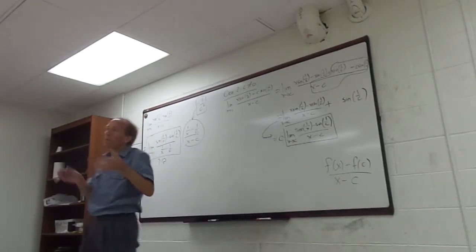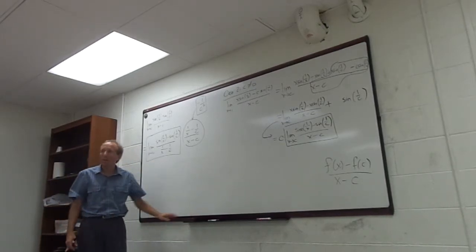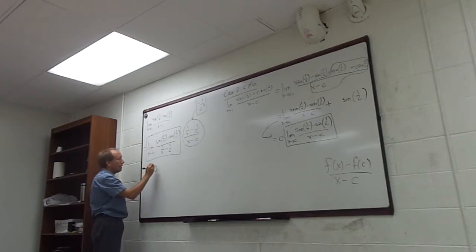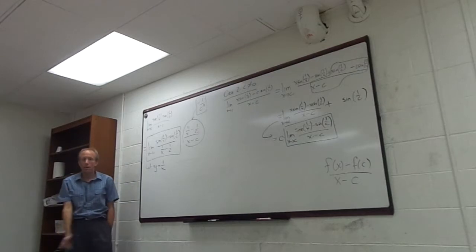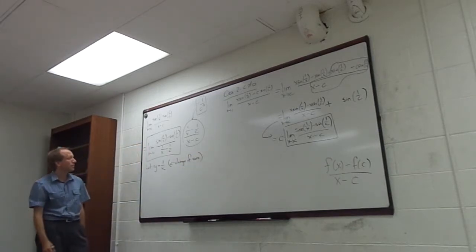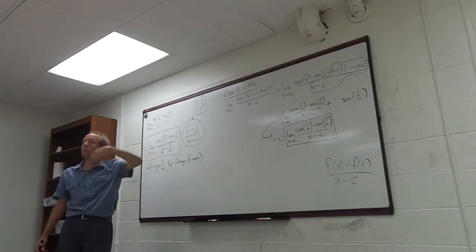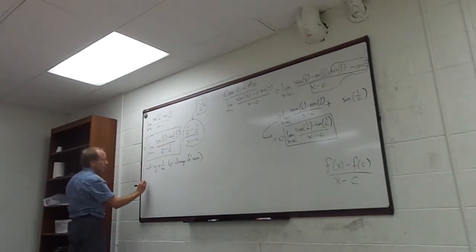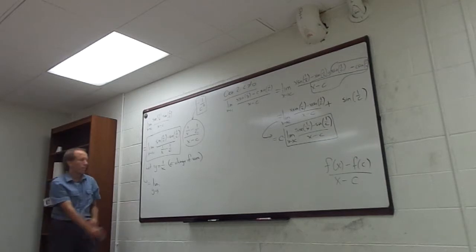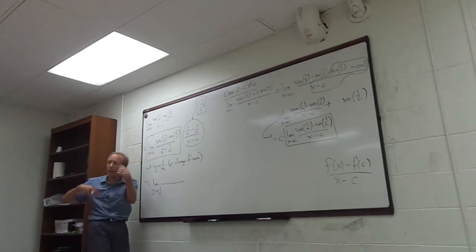We put (1/x minus 1/c) here to make it look like the derivative format. Now I'm ready to use trick number two that you've never seen me do before. The second part of the trick is: we're going to let y equal 1/x. You can think of this as a change of variables. I'm going to rephrase this limit — c is fixed, but x is a variable. If x was approaching c, then y is now approaching 1/c.